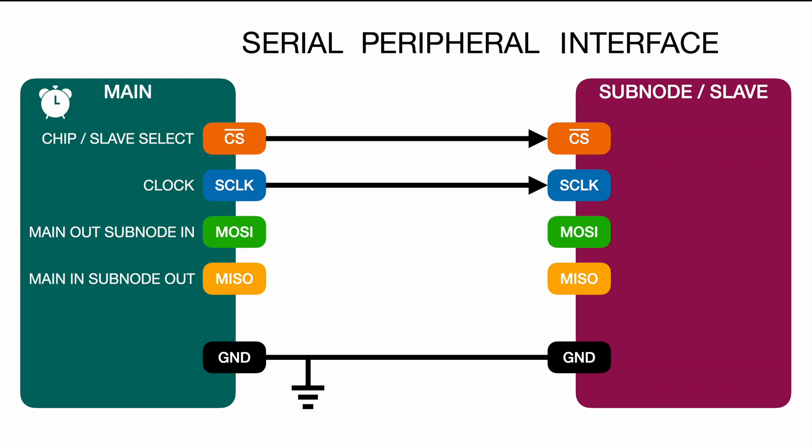Now to MOSI — Main Out Subnode In. This means the main outputs the data and the subnode takes it in. No matter whether you're looking at MOSI on the main or on the subnode, it already tells you who is receiving and who is sending. On the subnode it's subnode in, so that's where you receive. On the main it's main out, so that's where you send.